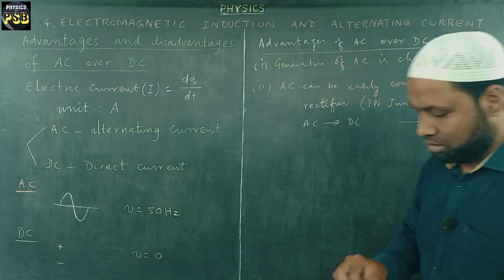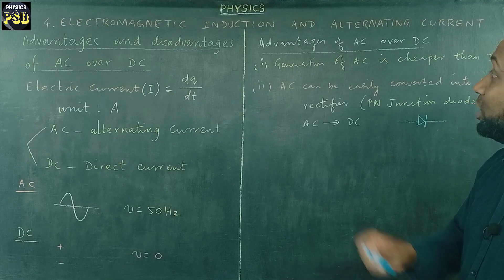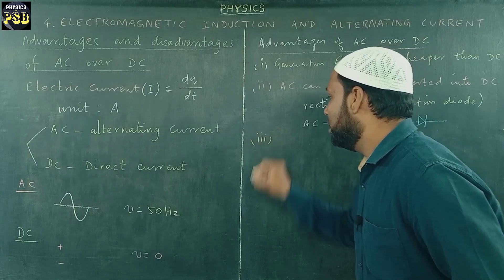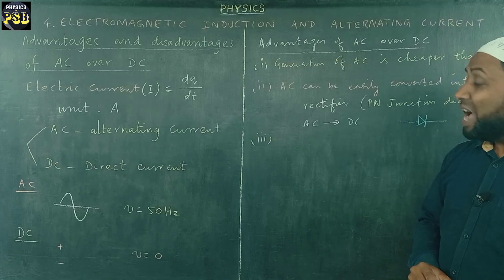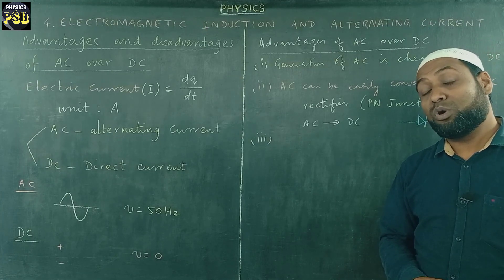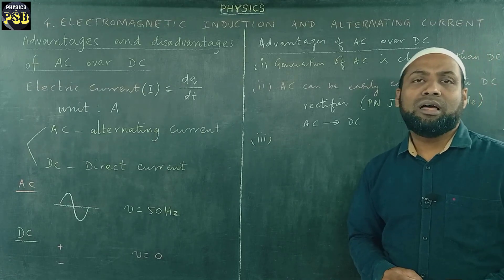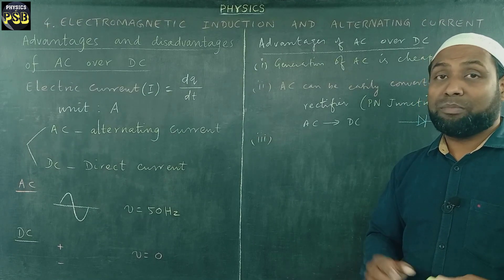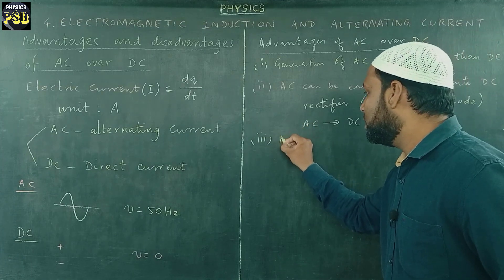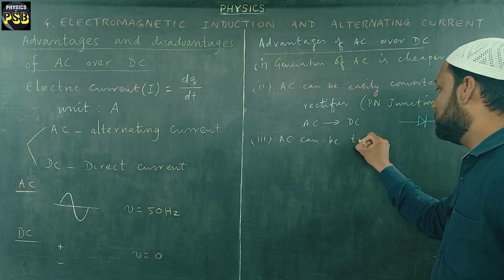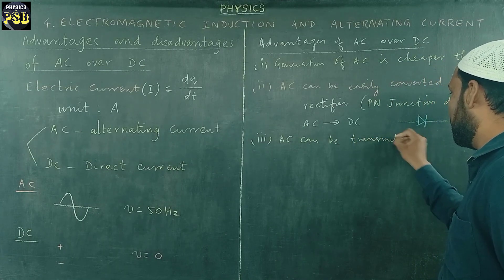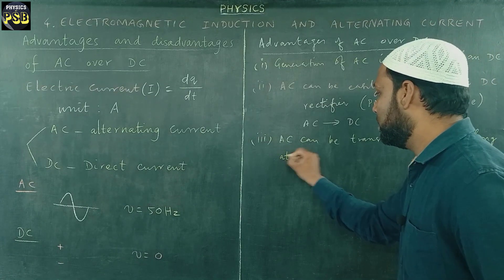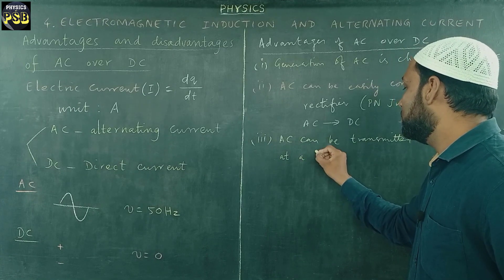Next, the most important advantage of AC over DC is at higher voltage, AC can be easily transmitted over a long distance with the least power loss. Whereas in case of direct current, it is not possible. AC can be transmitted over a long distance at a low cost.